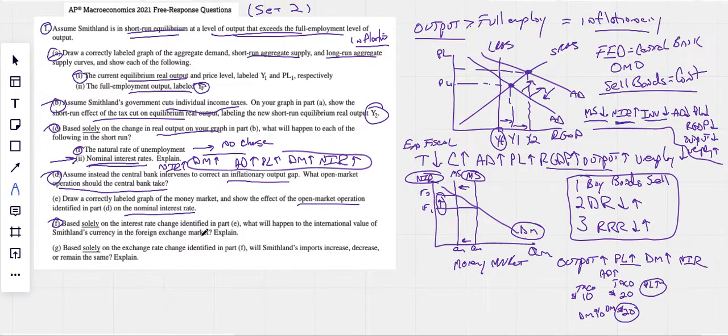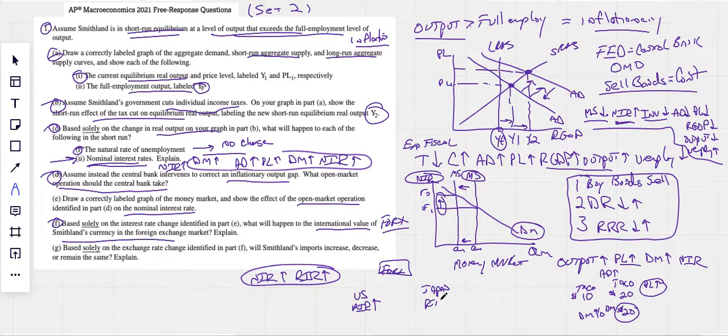Based solely on the interest rates changed in Part E, what will happen to the international value of the currency in the foreign exchange market? So this is foreign exchange stuff. What we see here is that our nominal interest rate is going up. And you should have known by now that when nominal goes up, real goes up also. They're going in the same direction. So we know when nominal goes up, we can say the real interest rate goes up. And we know that if we have, let's say, U.S. and Japan, here's our big 4X in the sky. If the U.S. has the higher real interest rate, that implies Japan has a lower real interest rate.